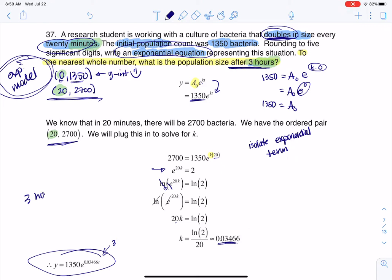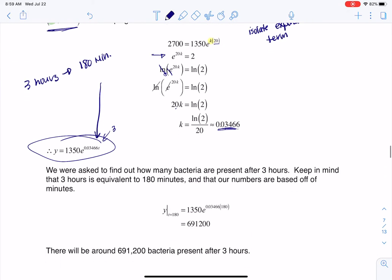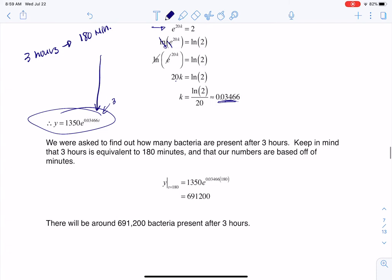And that's the value I want to plug in for t. So that's what I'm plugging in here. And when I plug in 180 minutes, I get 691,200 bacteria present after three hours. All right. And that's rounded to the nearest whole number. Okay, so thanks so much, gang. I'll see you later. Bye.